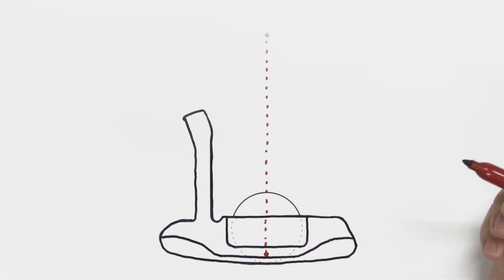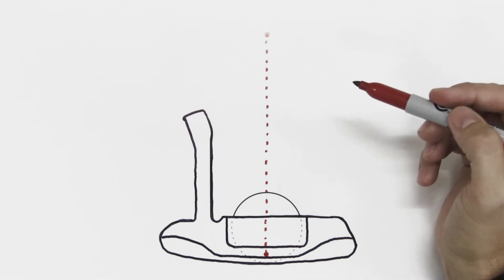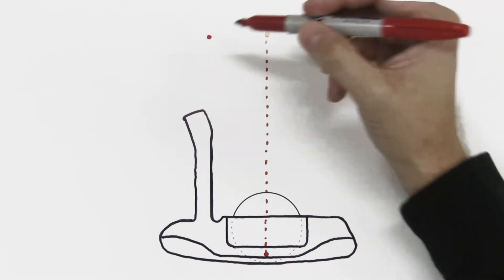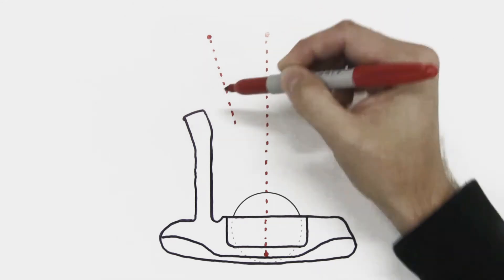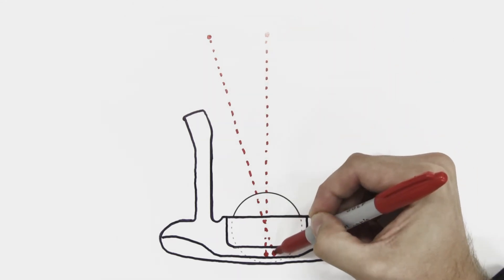However, about 80% of golfers don't have their eyes directly over the ball. Many of them have their eyes inside the golf ball. For those people, an alignment line right here would be more accurate.